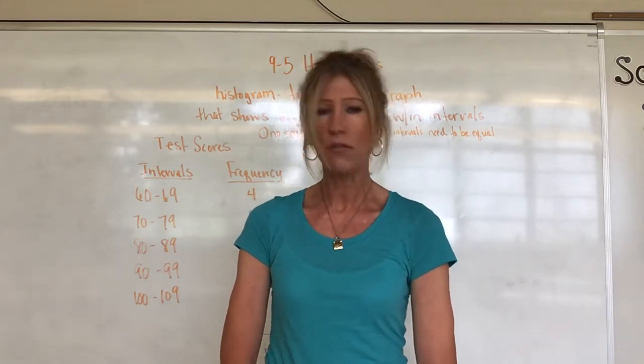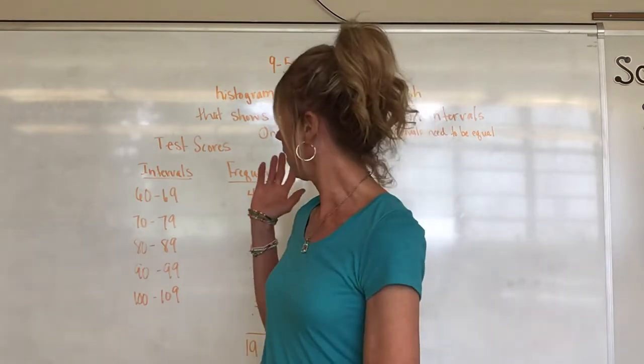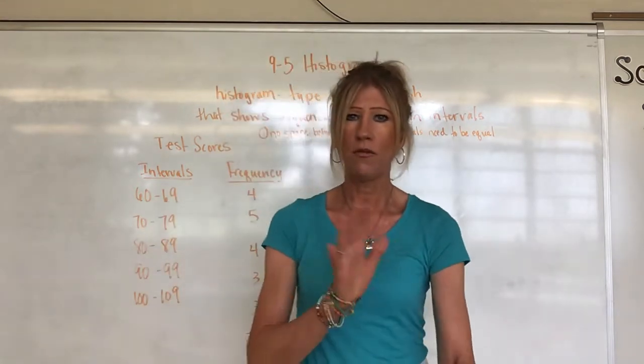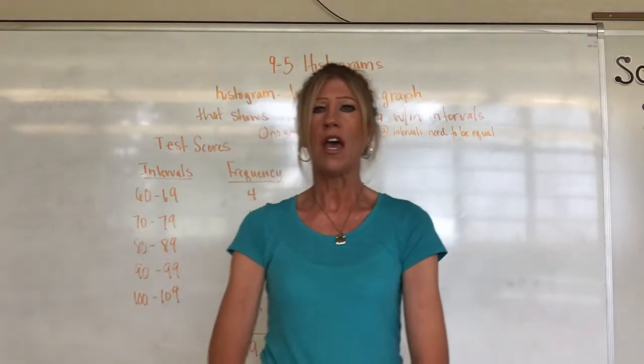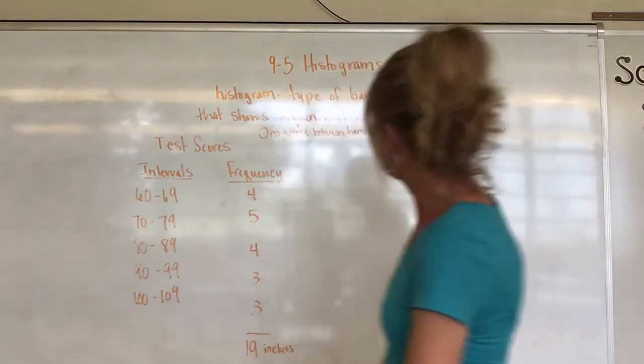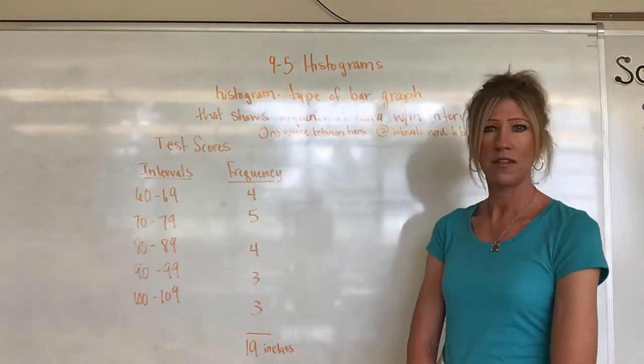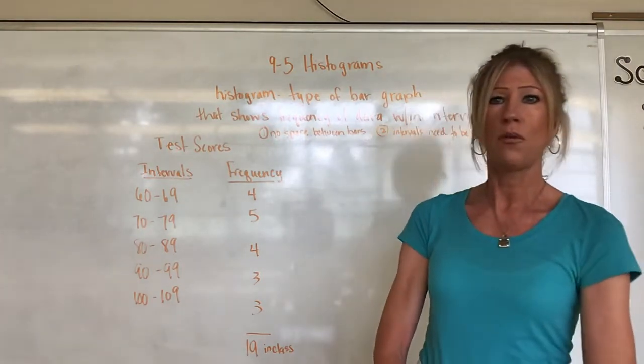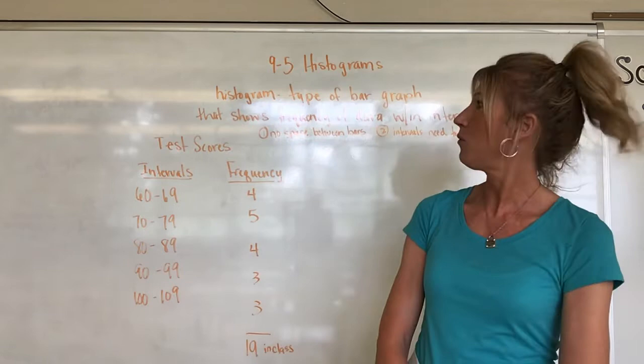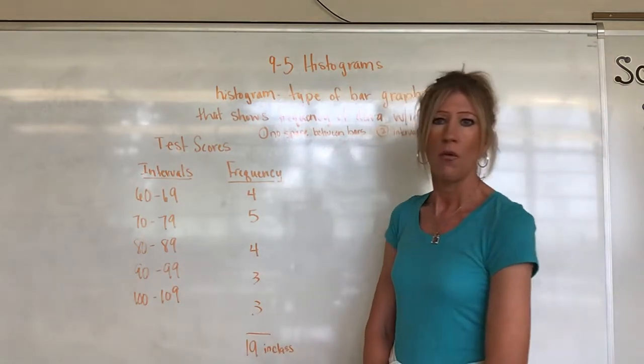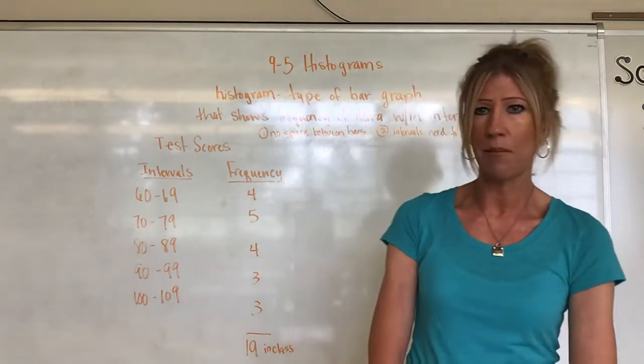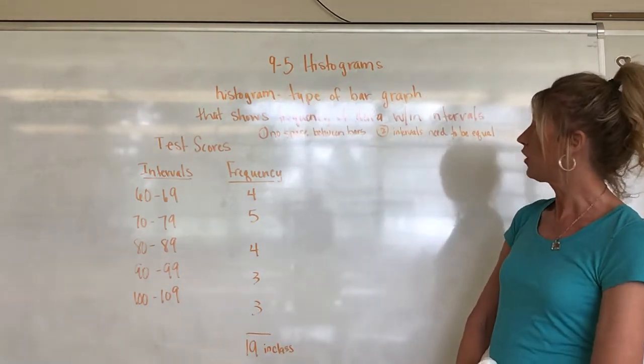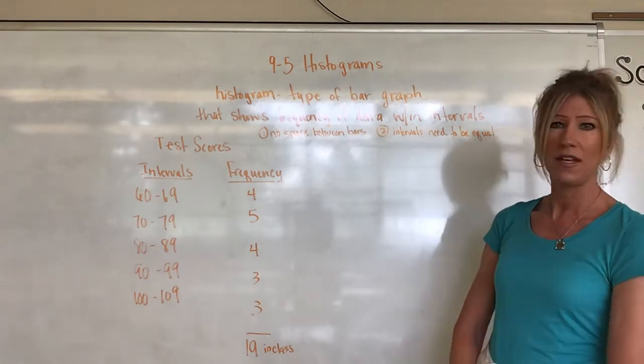Speaking of quizzes, we're going to use test scores today for our histogram and hopefully see the correlation here. So 9-5 histograms. This is our next section in our book. First of all, we always like to put our definition down, so we need to make sure our notes are out. What we are looking at today is something called a histogram. This is a type of bar graph that shows frequency of data within intervals.